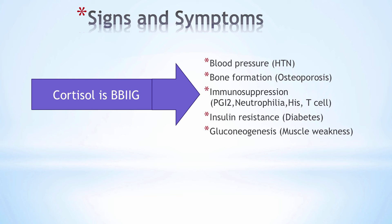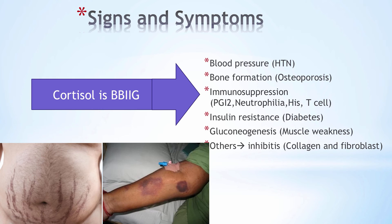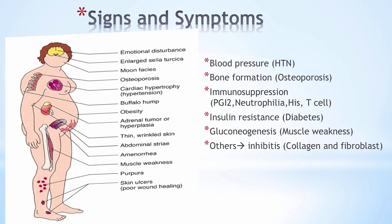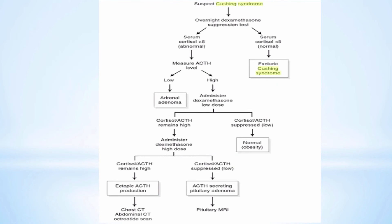Cortisol also inhibits collagen synthesis and fibroblastic activity, leading to weak skin and poor wound healing, which can manifest as stretch marks, easy bruising, and ulcers. Among the signs and symptoms of hypercortisolism, most — like obesity, hypertension, and osteoporosis — are too non-specific. More helpful findings are bruising, signs of hirsutism, and fat deposition along the cervical region, known as a buffalo hump.